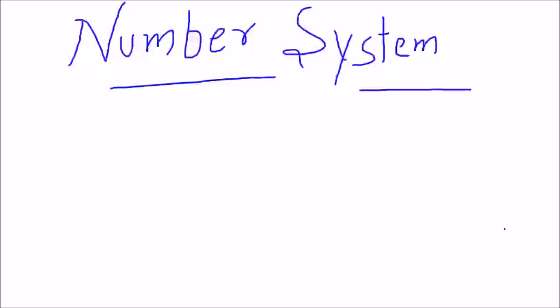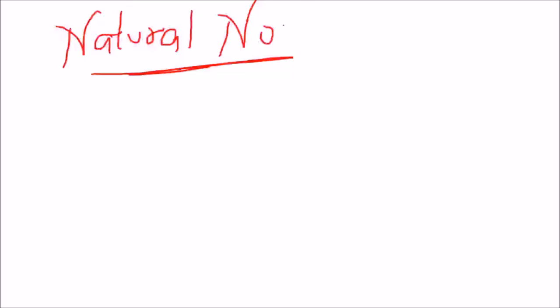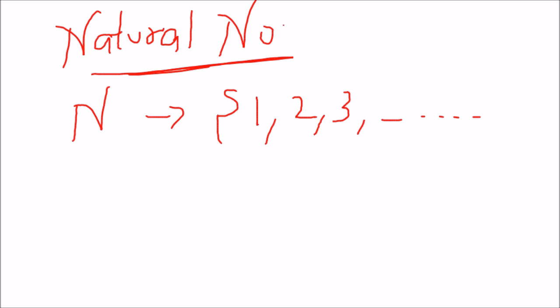Starting with natural numbers — this is the most common one. Natural numbers are the numbers that start with 1 and go up to infinity. There is no decimal included and no fraction included. We denote natural numbers with capital N, so the set starts from 1 up to infinity.